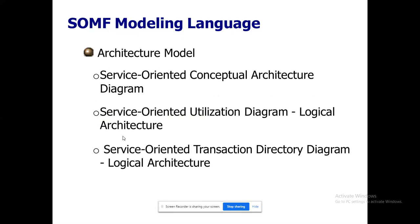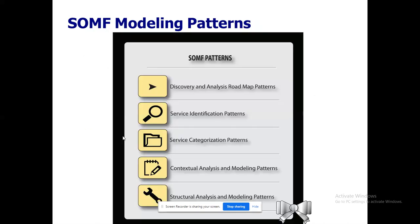Service oriented logical composition diagram - all these diagrams are responsible for the analysis phase and design phase pertaining to modeling. Modeling consists of analysis and design - that is why in our syllabus they give analysis, design, then modeling. The parameters introduced through the research paper get transformed into content here. Architectural model: conceptual architecture application diagram, transaction directory diagram for logical architecture. Analysis model, design model, architecture model - likewise there are patterns: discovery and analysis roadmap patterns, service identification patterns, service categorization patterns, contextual analysis and modeling patterns, structural analysis and modeling patterns. A very good certification for this is IBM 699 - now renamed IBM 9191-50.